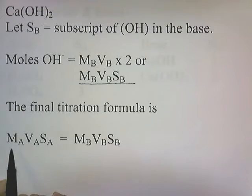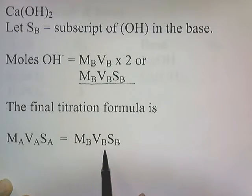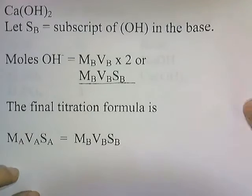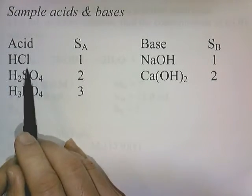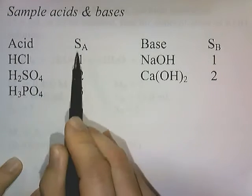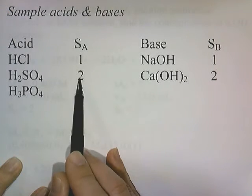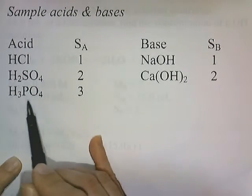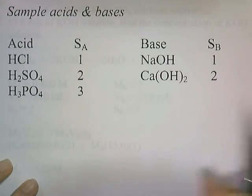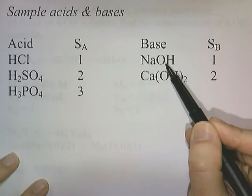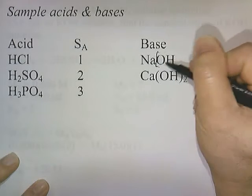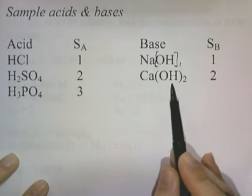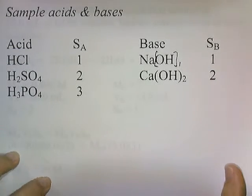The final titration formula is MA×VA×SA = MB×VB×SB. Here's a chart to help identify the subscripts. For HCl, SA is 1 — there's only one hydrogen. For H2SO4, SA is 2. For H3PO4, SA is 3 — these are polyprotic acids producing 2 and 3 hydrogen ions respectively. For NaOH, SB is 1 — only a single hydroxide. For calcium hydroxide Ca(OH)2, there's a 2 outside the hydroxide, so SB is 2.